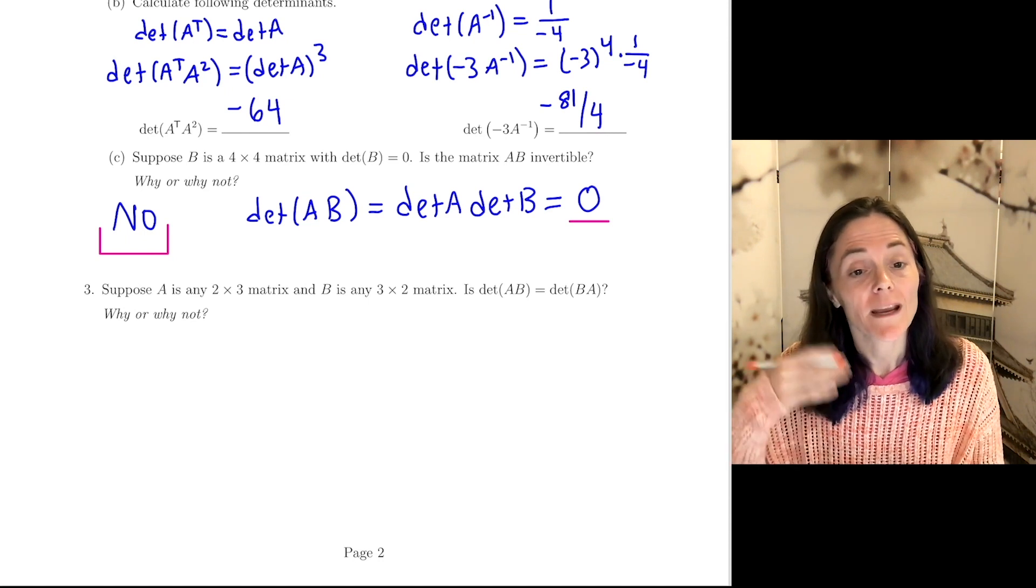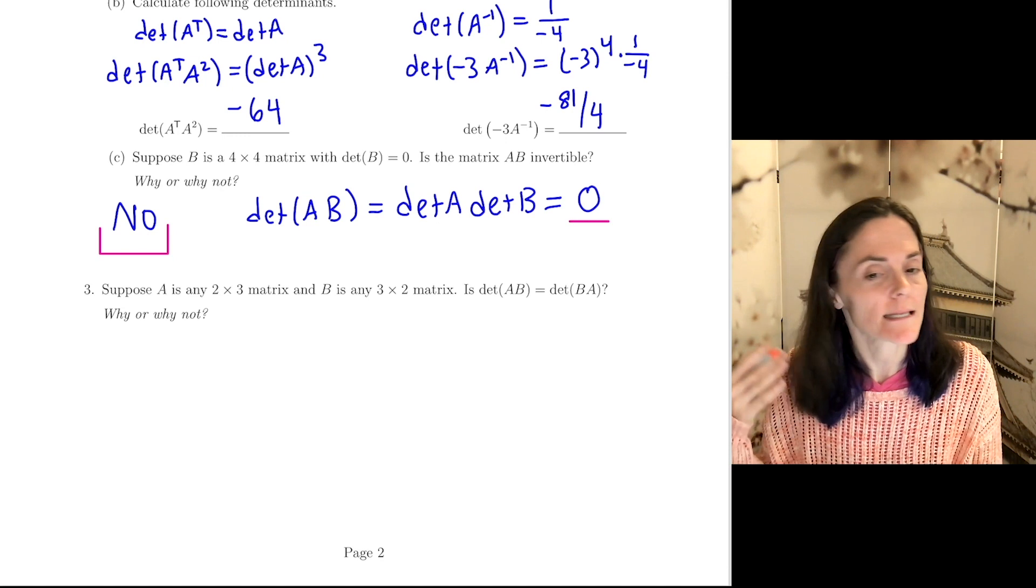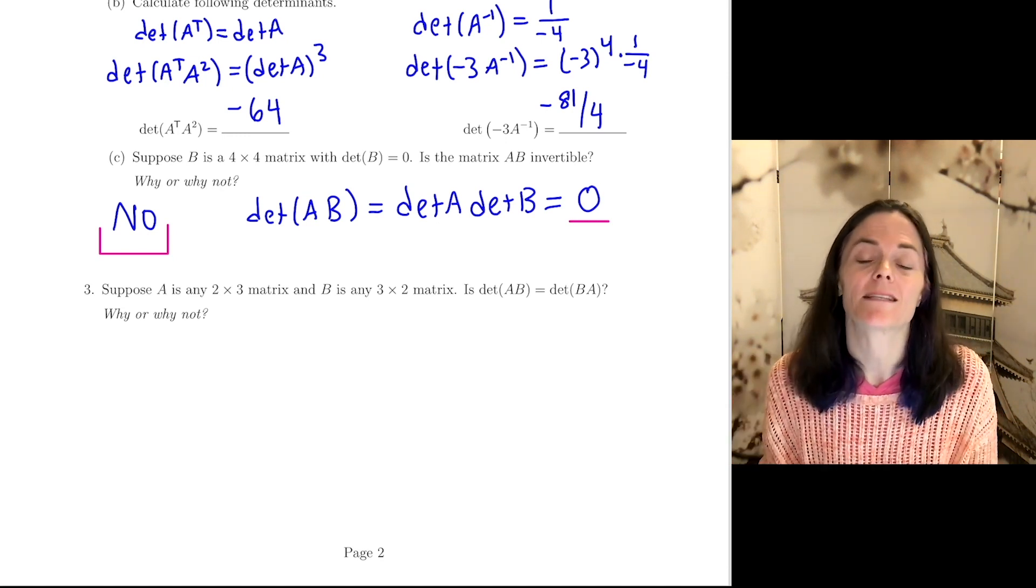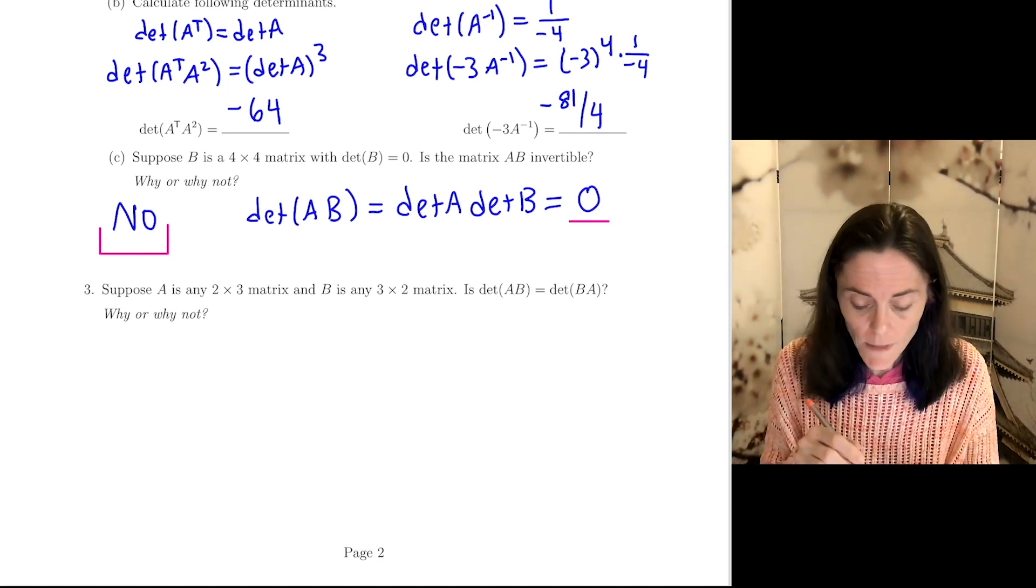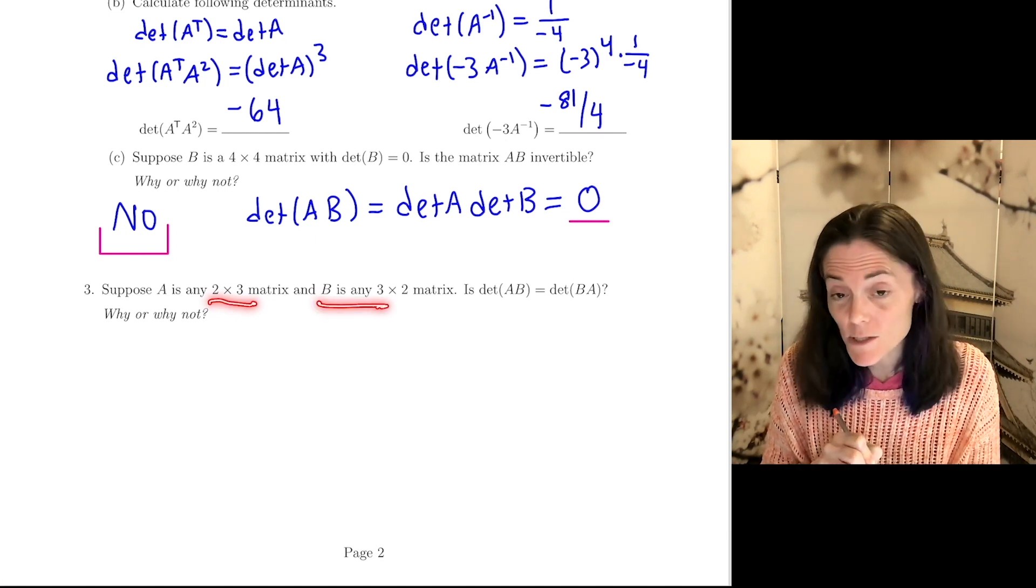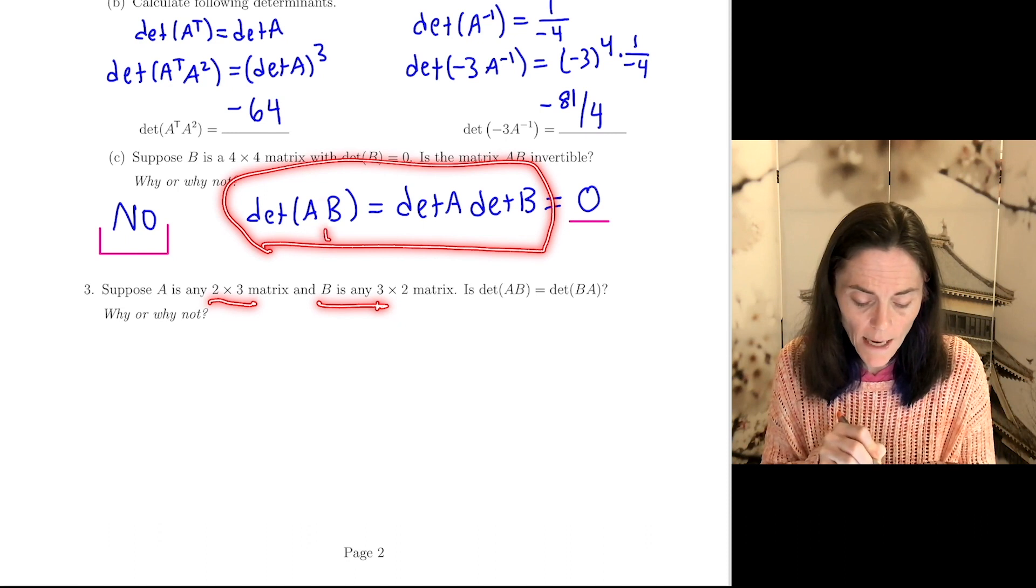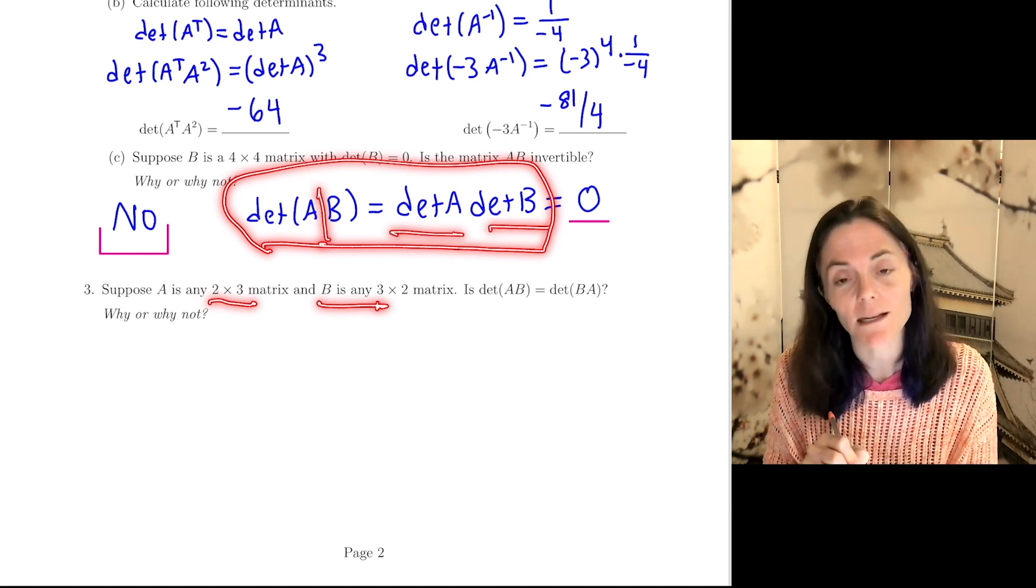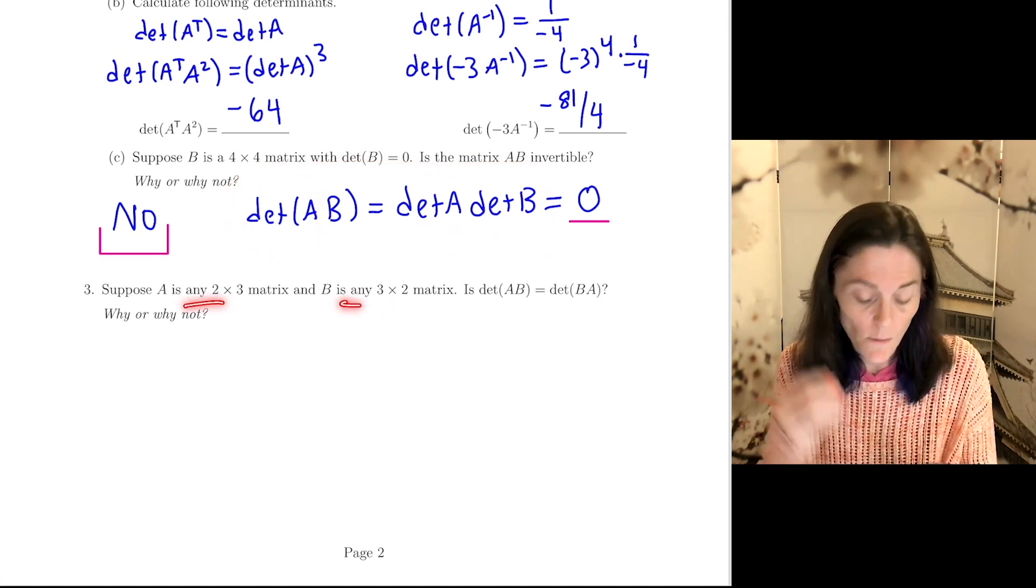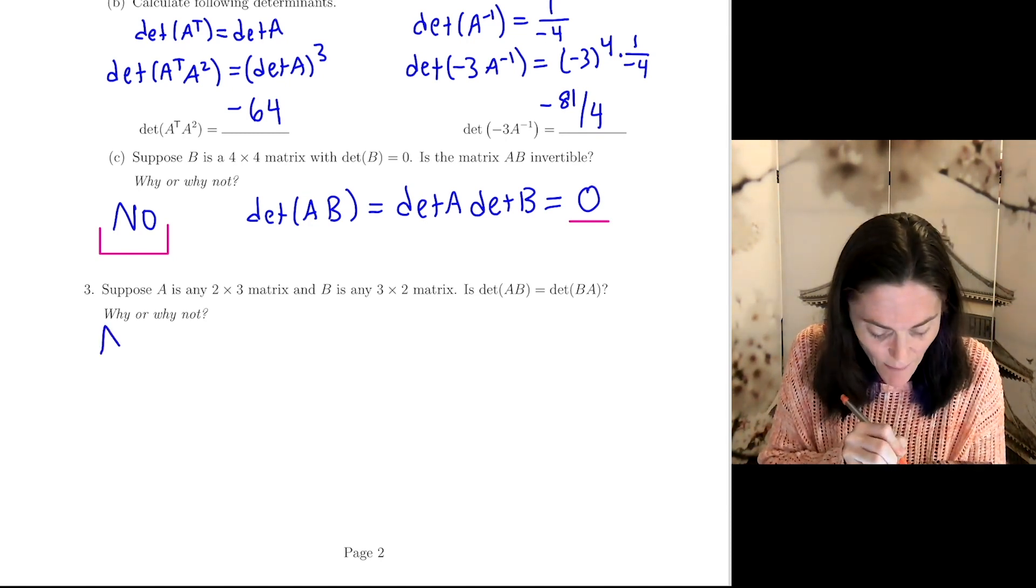So, last question. We are given A is 2 by 3 and B is 3 by 2. Is it necessarily the case that the determinant of A times B equals the determinant of B times A? Now, note that this is not a square matrix. And B is also not a square matrix. So, unlike above right here where I could break the determinant of a product into a product of determinants, I cannot do that here. Because A and B are not square. The answer here is no, but let's talk about why.